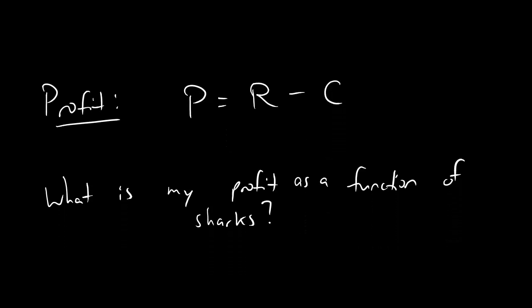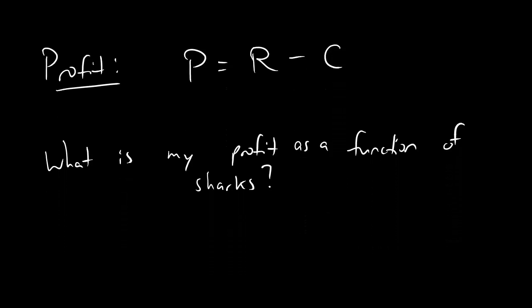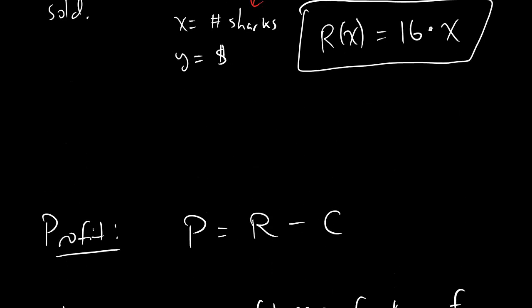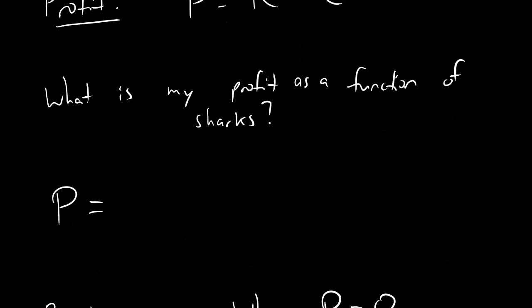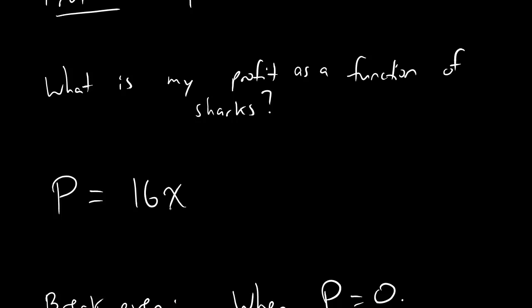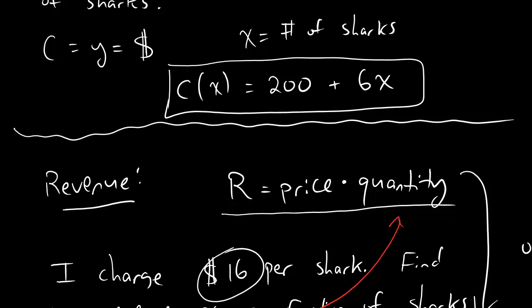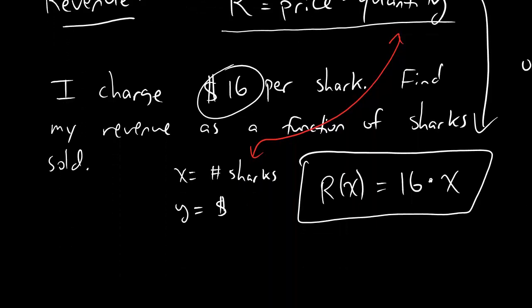So that's revenue. And now let's talk about where the money is, people. Show me the money. And the money is in profit. The simple formula for profit is that profit equals revenue minus cost. So if you see this question that says, what is my profit, then you're just going to write profit equals, and you got to scroll up and figure out your revenue function, 16x minus, you got to scroll up a little bit further, and remember what your cost function was.